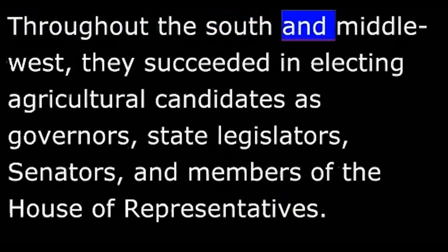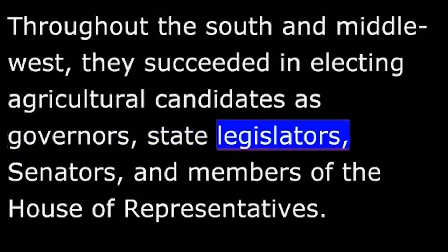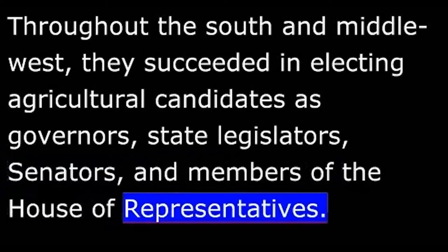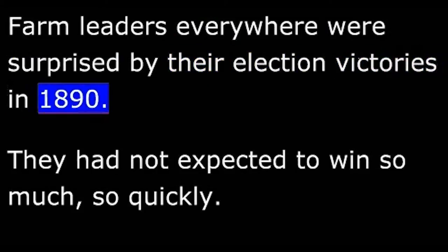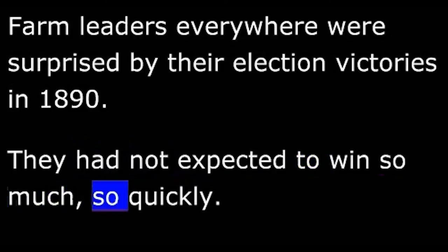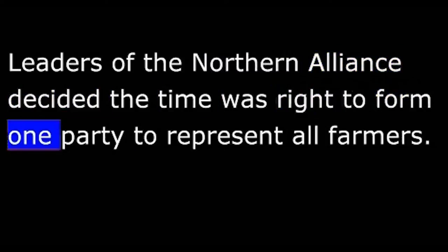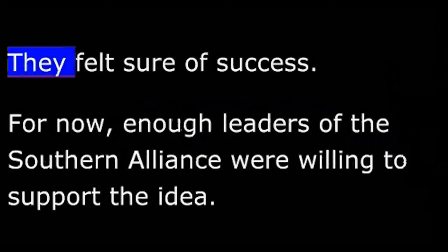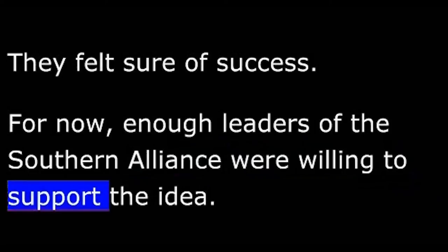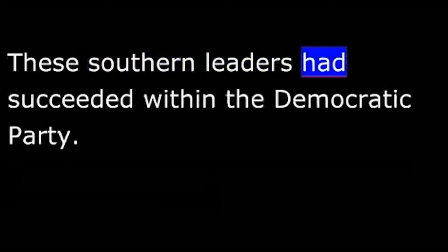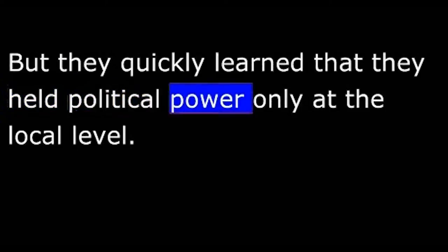Throughout the South and Middle West, they succeeded in electing agricultural candidates as governors, state legislators, senators, and members of the House of Representatives. Farm leaders everywhere were surprised by their election victories in 1890. They had not expected to win so much so quickly. Leaders of the Northern alliance decided that time was right to form one party to represent all farmers. They felt sure of success, for now enough leaders of the Southern alliance were willing to support the idea. These Southern leaders had succeeded within the Democratic Party, but they quickly learned that they held political power only at the local level.